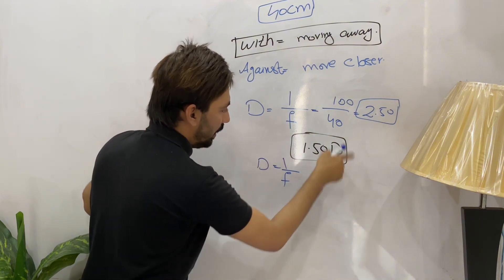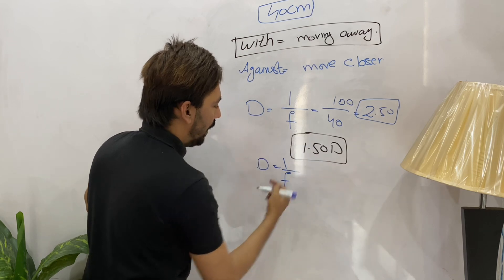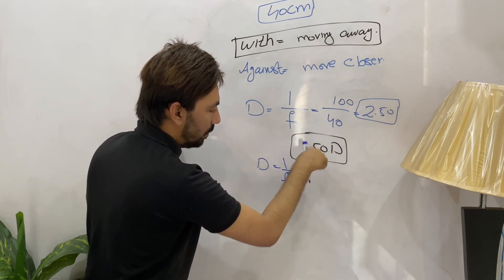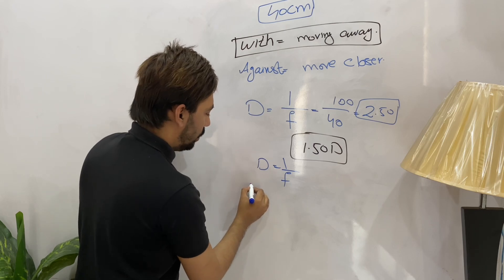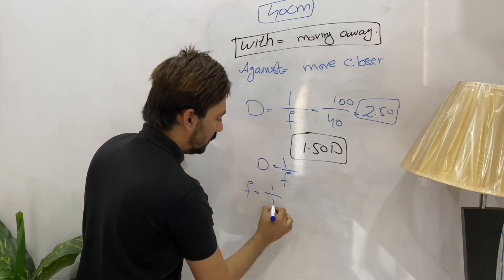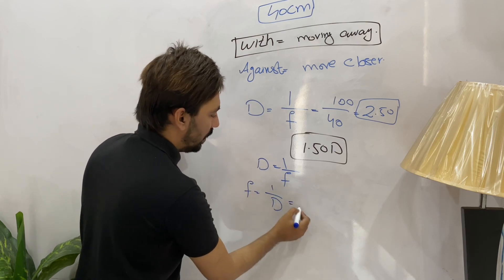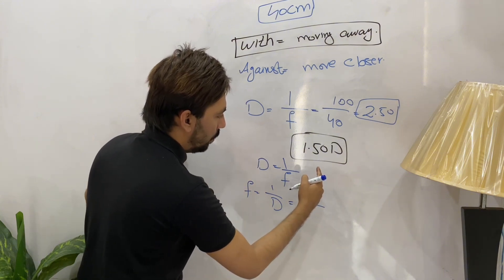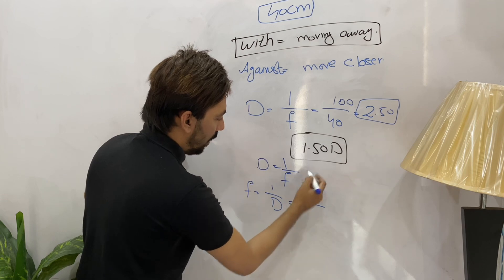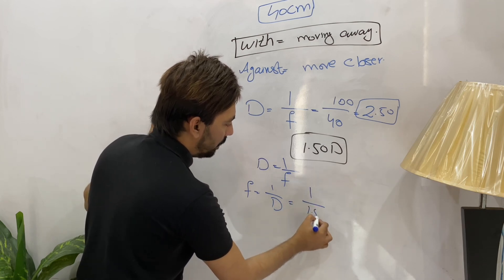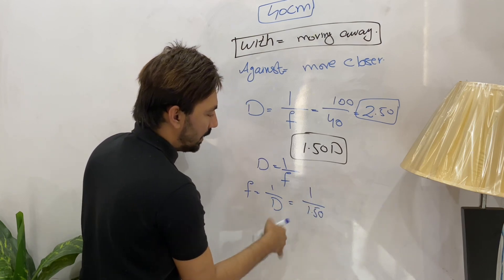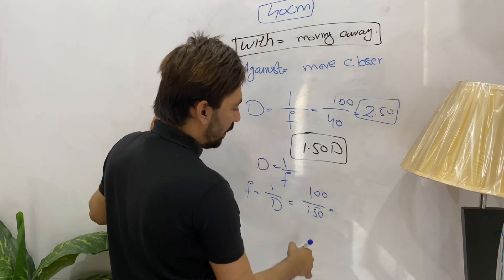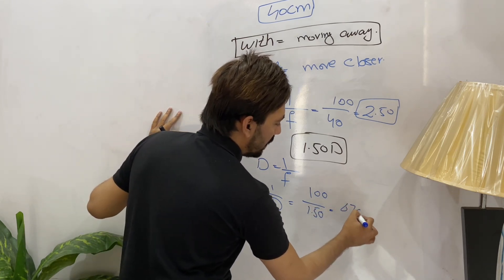Using the formula D = 1/f, rearranged as f = 1/D, with the supposed deficiency value of 1.5 diopters: f = 100/1.5, which gives 67 centimeters. So that with movement will be neutralized at 67 centimeters.